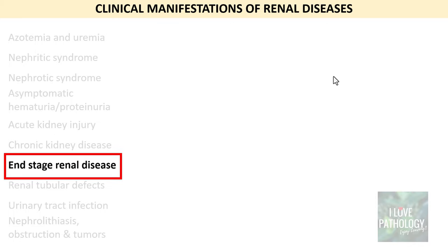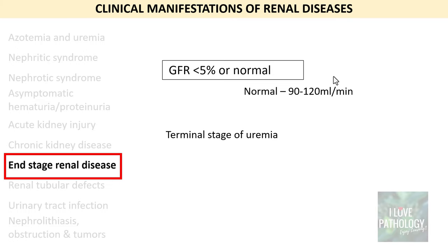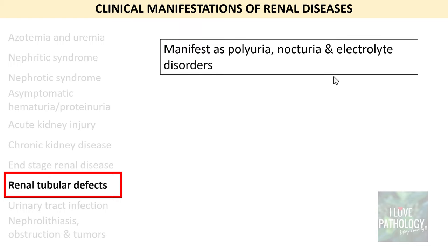End-stage renal disease is a manifestation of various forms of renal diseases where the glomerular filtration rate is less than 5% of normal. Since normal GFR is 90 to 120 ml per minute, less than 5% accounts to around 4.5 to 6 ml per minute. This is actually the terminal stage of uremia.